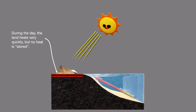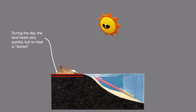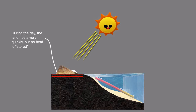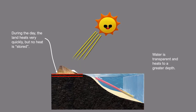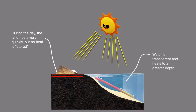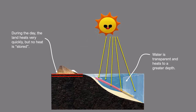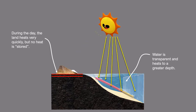This means that the land heats extremely quickly, but that very little of this heat is stored, because only the top few centimeters receive any of this heat. The ocean, on the other hand, is transparent. This means the sun's rays can penetrate the water to a greater depth, and therefore heat stores to a greater depth.